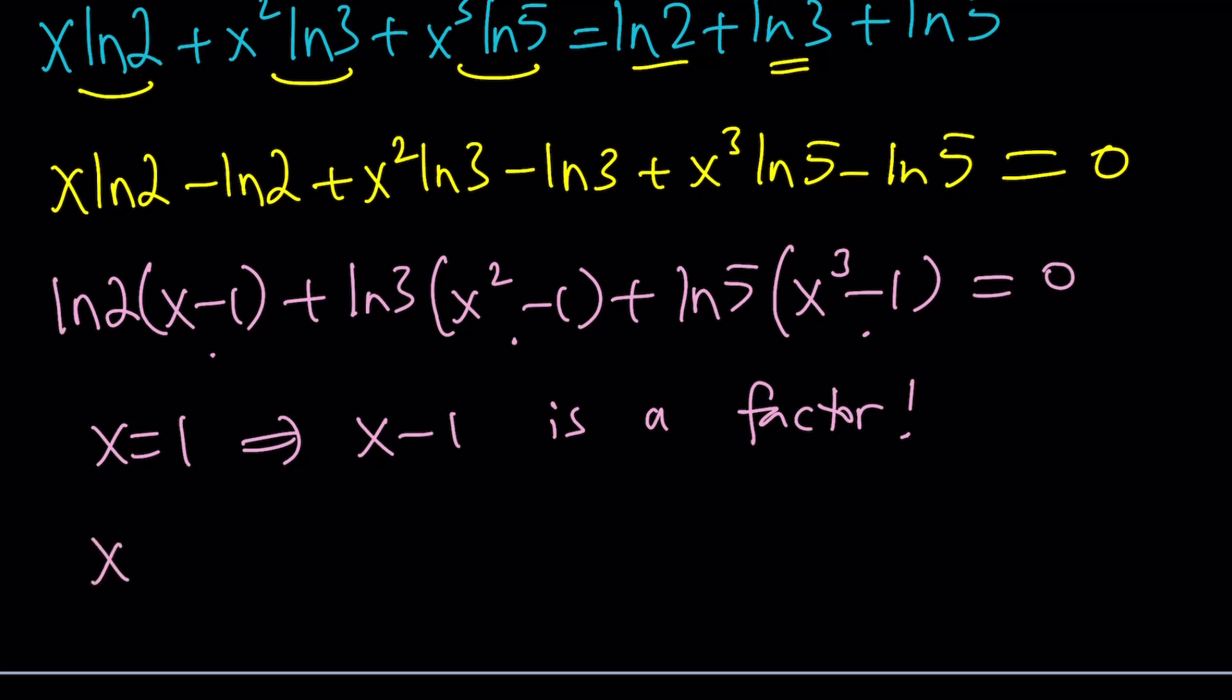Now, if you take out an x minus 1, you're going to get the ln 2, and from here, you're basically going to get the ln 3, but also x plus 1. I don't know how you want to write ln 3 times. It's probably better to write the x because that could be otherwise confusing. x plus 1 is the other factor times ln 3.